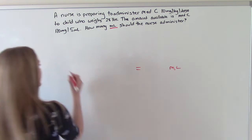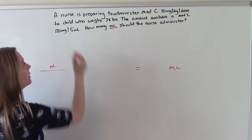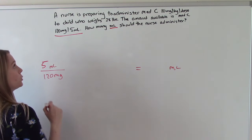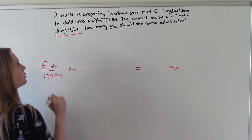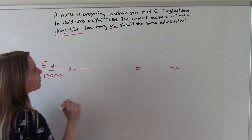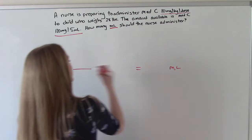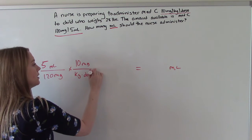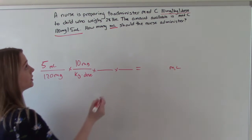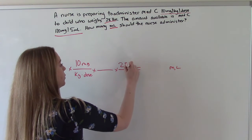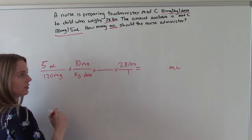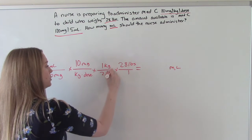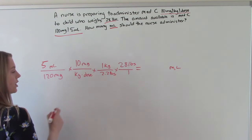So mLs is what we want in our answer, so mLs has to be in our numerator somewhere. Where is it in the problem? It's right here. So 5 mLs is 120 milligrams. What else do we know? We know that we want to give 10 milligrams per kilogram per dose, so we can put that here. We also know the child's weight, which is 28 pounds, so we'll put 28 pounds over 1. And then we need a converting factor for our pounds to kilograms. So 1 kilogram is 2.2 pounds.